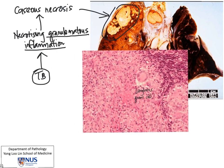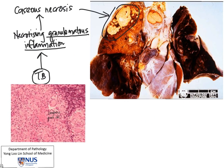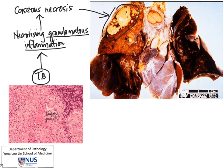So what we have here is necrotizing granulomatous inflammation that is involving the lung parenchyma caused by tuberculosis infection, which is persistent. And we also have the same process involving the mediastinal lymph nodes. Granulomatous inflammation is a type of chronic inflammation where the body is not able to get rid of the inciting agent.